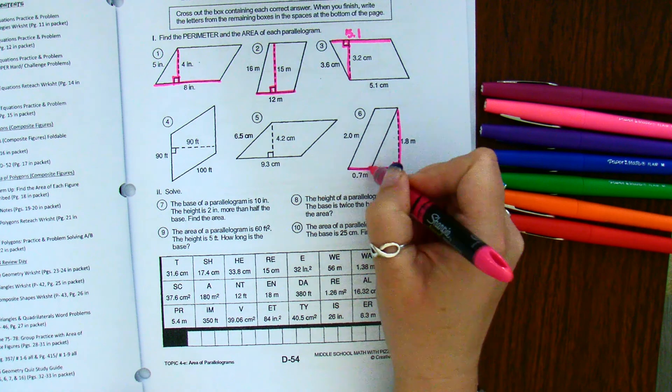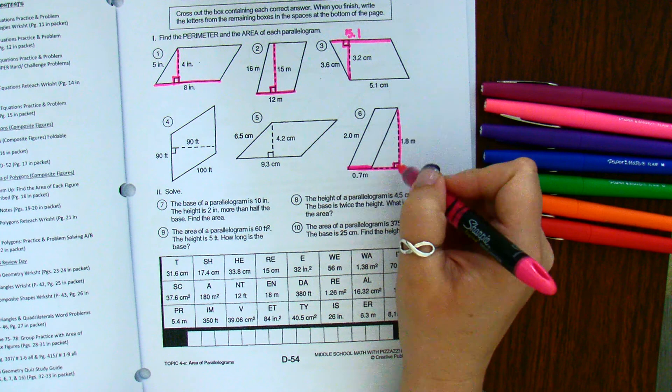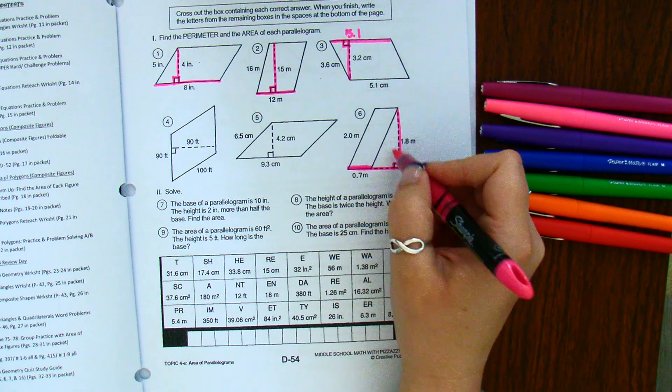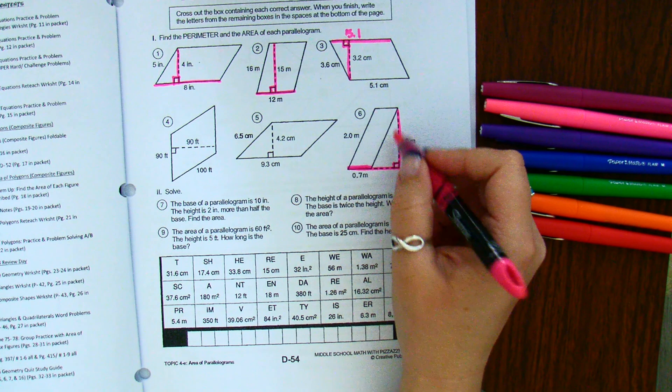And my actual base length is only from here to here, because notice that this isn't actually part of the figure. But when it says the height, it wants the perpendicular height, the one that comes at a right angle.